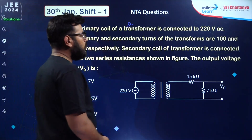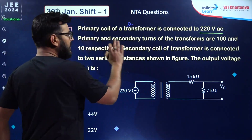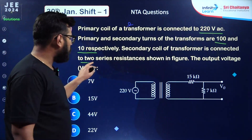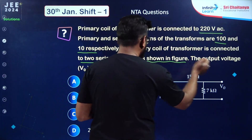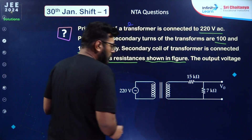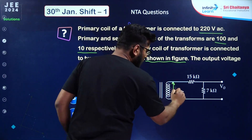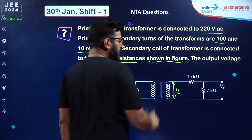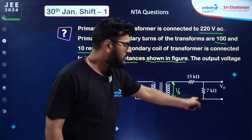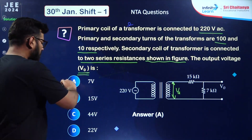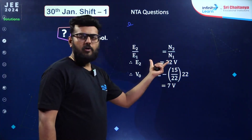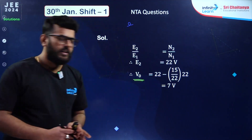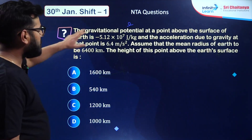From alternating current: primary coil of a transformer connected to 220 volt AC source. Primary and secondary turns are 110, making this a step-down transformer. Secondary coil is connected to two series resistances. First find the value of V_s, then calculate the current running in the circuit. 7 times I gives the output potential across 7 kilohm. The correct answer is option number A, that is 7 volt.